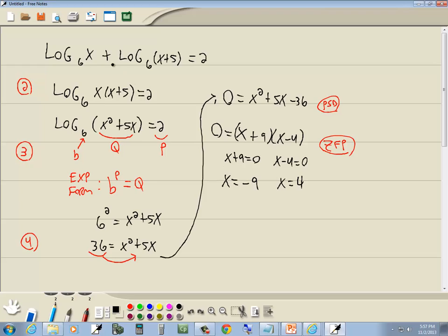Well, let's check them. If I put negative 9 back in my original equation, put negative 9 in here for this x, I'm going to have log of a negative number. We can't have that, so that one goes away.